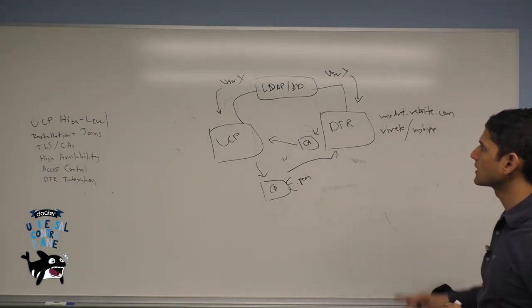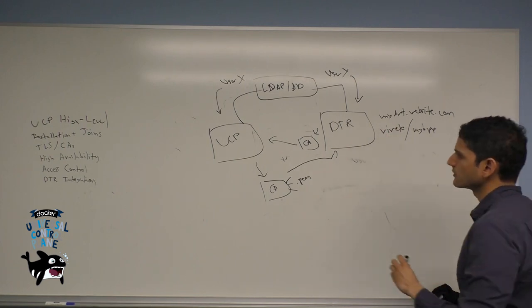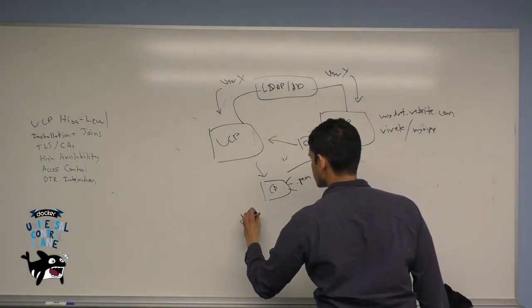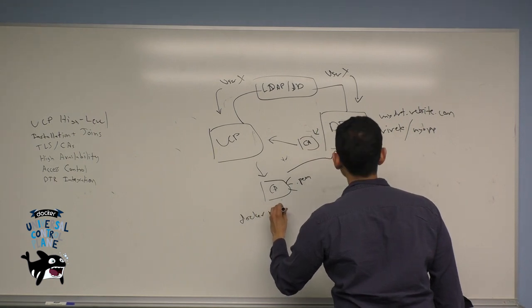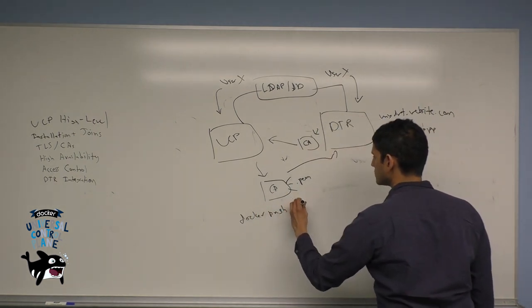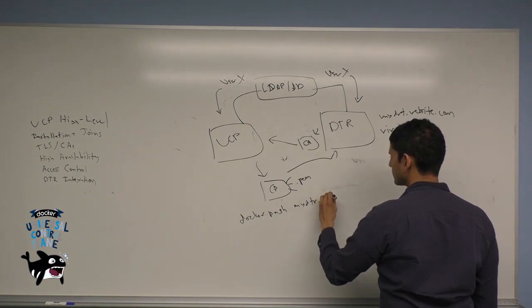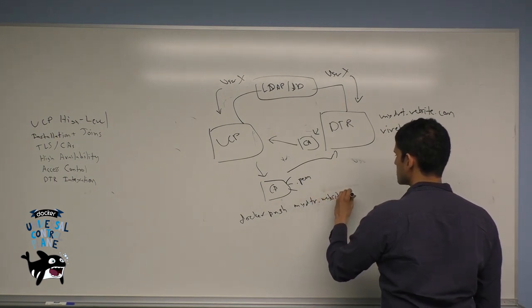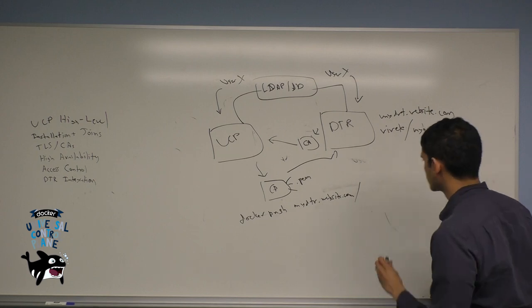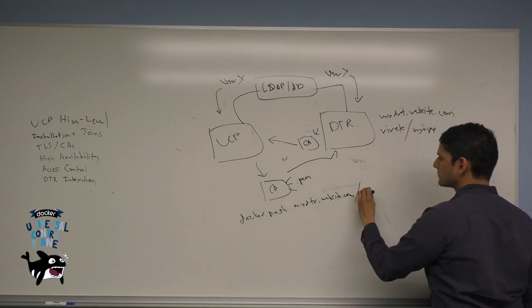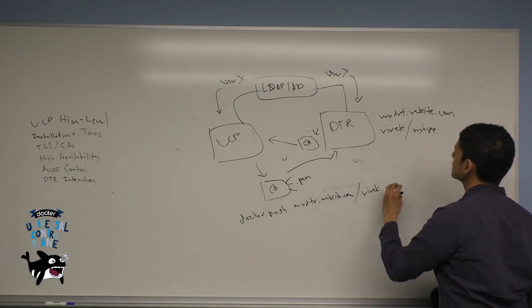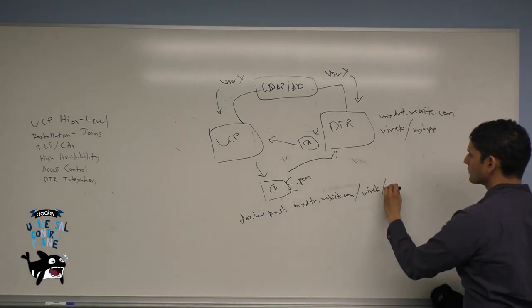Once I have this set up, I can do a docker push mydtr.website.com with the repository—that could be my namespace, Vivek—slash the app that I want to use,